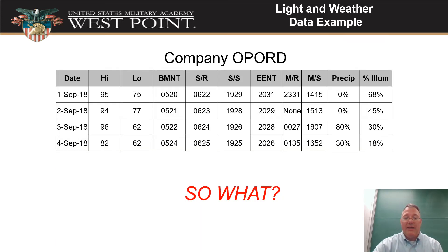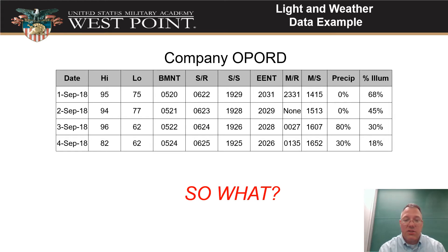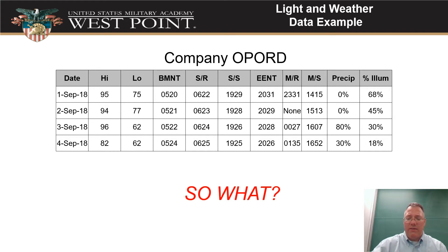So what are you going to get in the field? The company op order is going to give you a big table with a whole bunch of things. It includes weather data — highs and lows for each day — and then lists BMNT, SR, SS, EENT, MR, MS, precipitation, and LUM (illumination). Let's talk about what all these things mean.